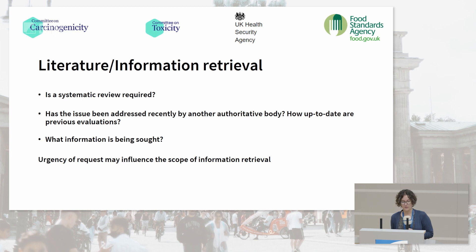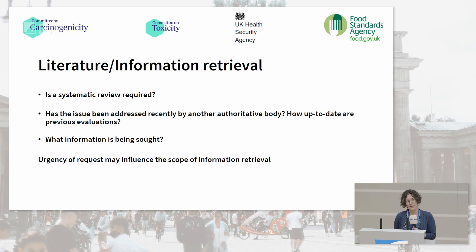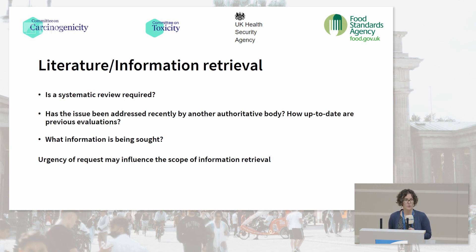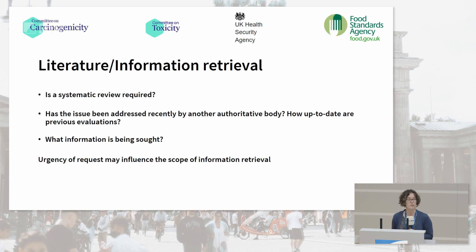The second part is guidance focused on literature retrieval. The urgency of the request often influences the level of information retrieval that is possible — for example, whether a systematic review is actually feasible. In cases of urgent assessments, that is not always possible. There are also questions around whether another authority has published a recent assessment that can be used as a starting point, and what sort of information is being sought — whether it is on a specific question, a general assessment of a new compound, or an update of an existing assessment.